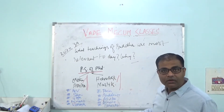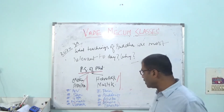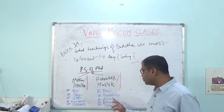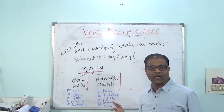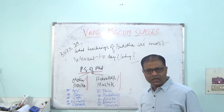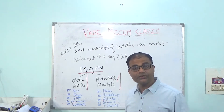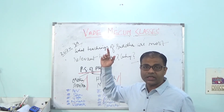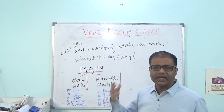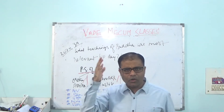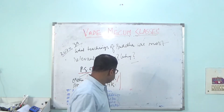Heterodox philosophies, which do not believe in the authority of the Vedas or God, are basically Jainism, Buddhism, Ajivika, Ajnana, and Charvaka. Charvaka philosophy is also called Lokayata. They are actually hedonists. We have discussed hedonism — ethical hedonism and psychological hedonism — in our previous lecture.